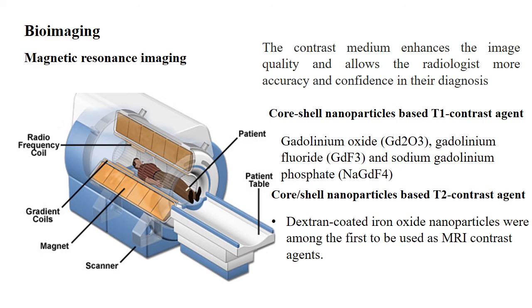Another is super paramagnetic iron oxide, with a size between 50 to 500 nanometers, and ultra-small super paramagnetic iron oxide nanoparticles with a size less than 50 nanometers. Both have been extensively used as contrast agents for MRI. This is all about the magnetic oxide nanoparticles in MRI.